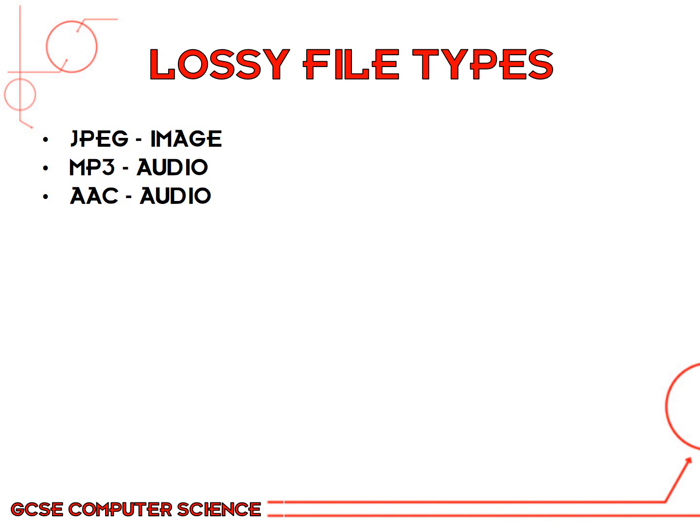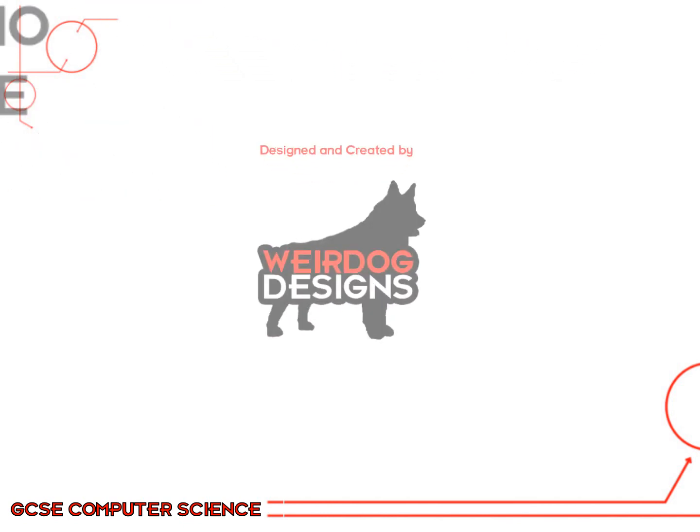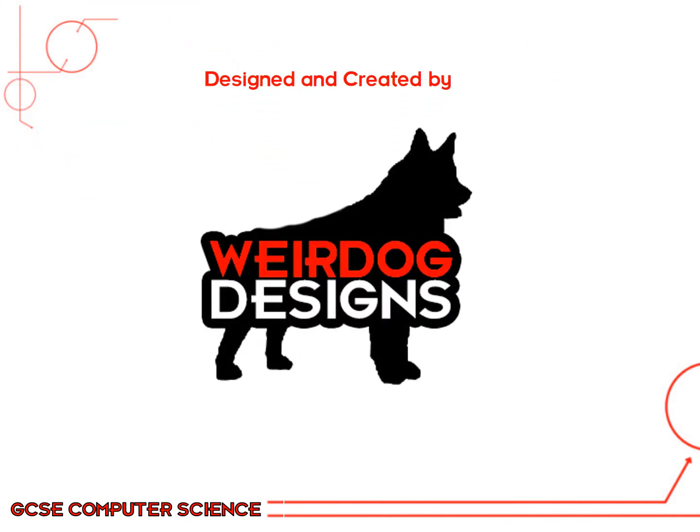The main file types associated with lossy compression are JPEG image files, MP3 audio files, and AAC audio files. For lossless compression, example file types include PNG for images, FLAC for audio, and TIFF for images.